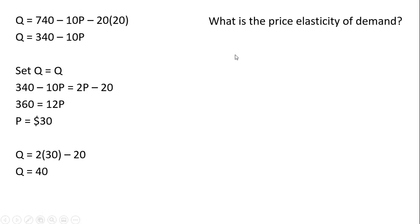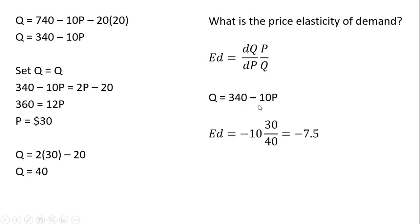Moving on to the elasticity part — what is the price elasticity of demand? Here's our formula. We're going to take the derivative of the demand equation and then multiply it by the equilibrium price divided by the equilibrium quantity. Taking the derivative of the demand equation, we get back minus 10. The equilibrium price is $30 and the equilibrium quantity is 40, so we get an answer of minus 7.5. Pretty elastic demand in this example — a 1% increase in the price of golf balls reduces quantity demanded by 7.5%.